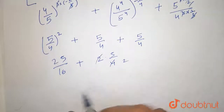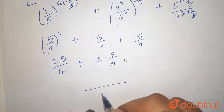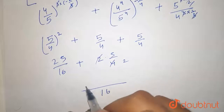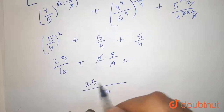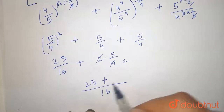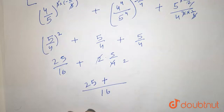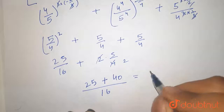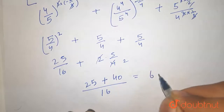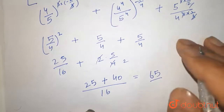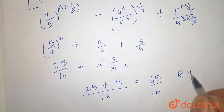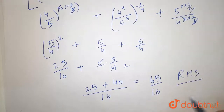So I can take LCM here, that is 16, which gives us 65 upon 16, and this is our right hand side. Hence proved.